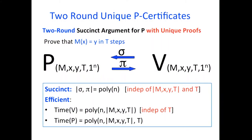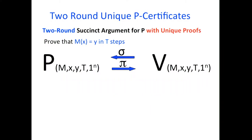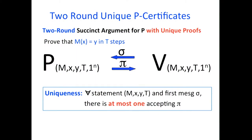The efficiency of the verifier depends only on the length of the statement, whereas the prover naturally has to run in time at least the runtime of the computation itself. The special property we require is uniqueness: for any statement — whether true or false — and any verifier's first message, there exists at most one accepting proof.